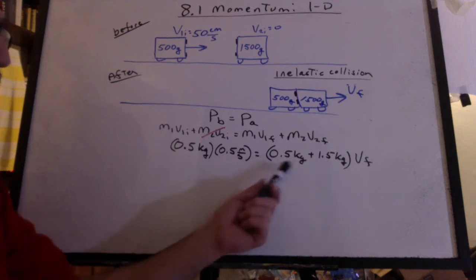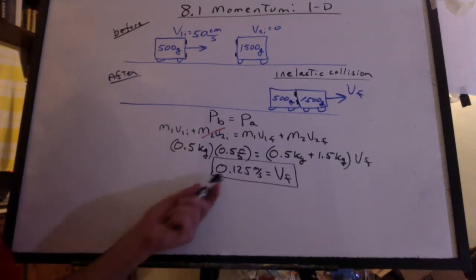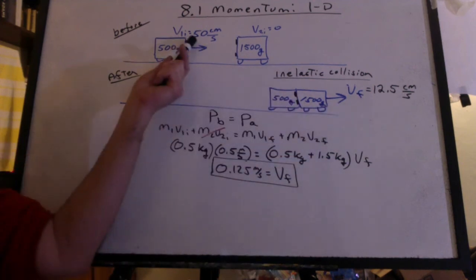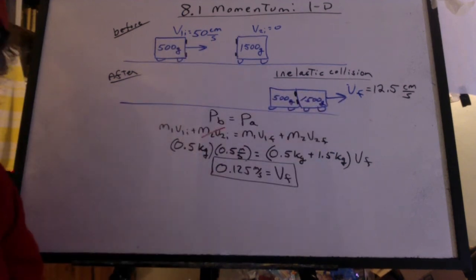We add the masses of the carts. It's like one object. And we get a velocity of 0.125 meters per second, or 12.5 centimeters per second. Which kind of agrees with this. This is 50 centimeters per second. We're smashing into a much larger cart. So yeah, the velocity has to be substantially smaller.